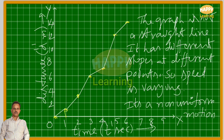Now let us draw the triangles. For each one-second interval, we are constructing triangles. By observing these triangles, the slope — tan theta value — is different for each triangle. The base (adjacent side) is the same, whereas the opposite sides are varying. That means the slopes are varying, which means it is a non-uniform motion.